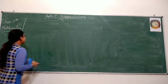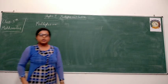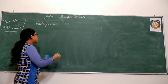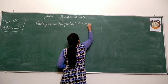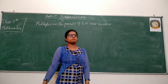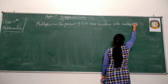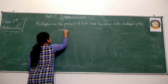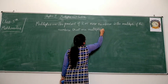So firstly let me tell you the definition of multiples. What are multiples? Multiples are basically the numbers that you obtain after multiplying two numbers. That is, the product of two or more numbers is the multiple of the numbers that are multiplied.